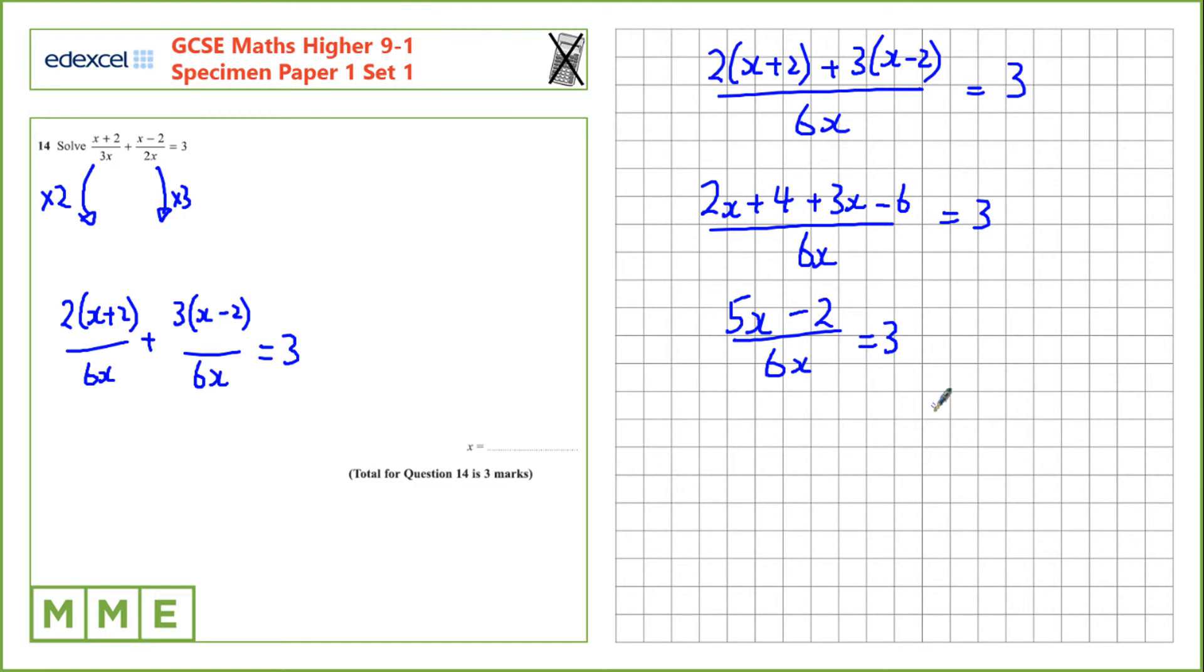Now, in order to rearrange this, we're going to have to multiply by 6x to release the top of this fraction from the rest of the fraction. So, on the left hand side, we'll have 5x minus 2, and we've got to multiply 3 by 6x, which is 18x.